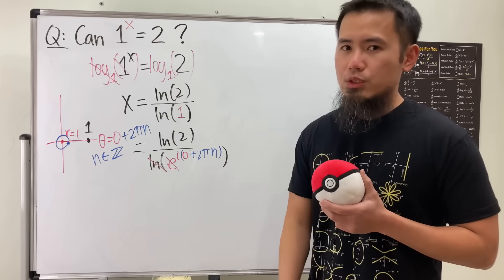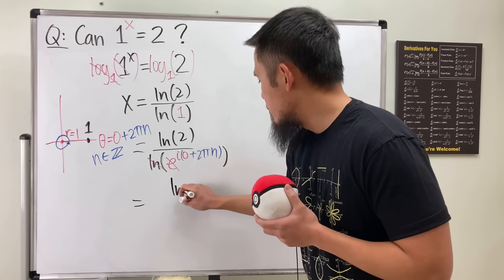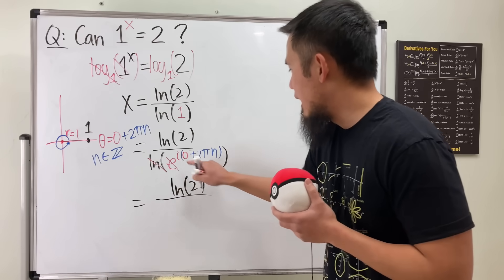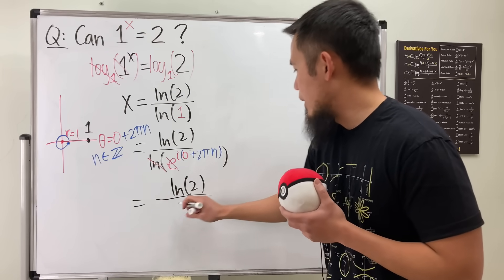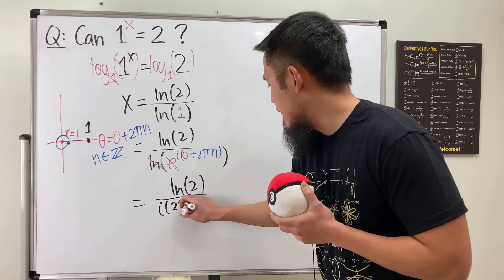Now we can cancel this out. And we don't really have to have a 0 on the bottom anymore. And then what we have is just going to be ln 2 on the top, and then we have i times 2π·n.